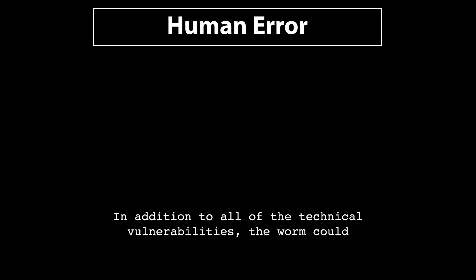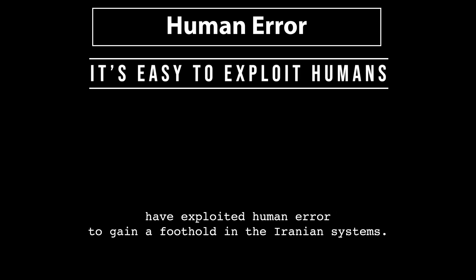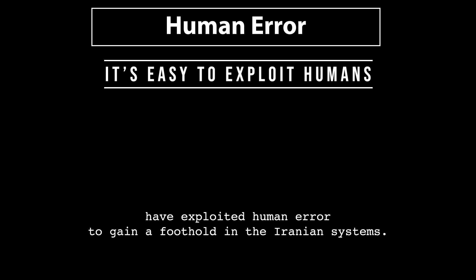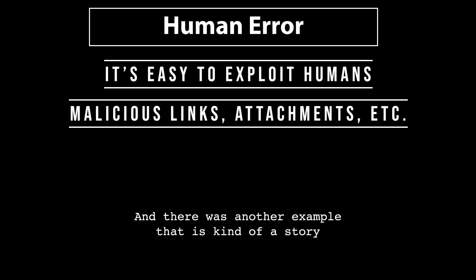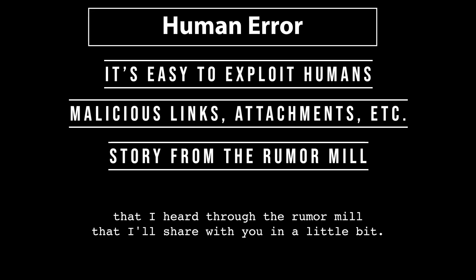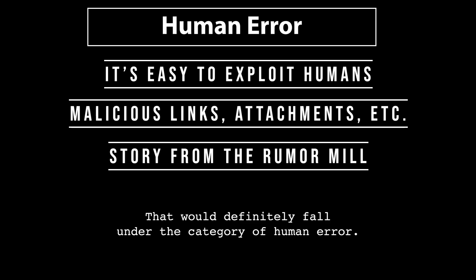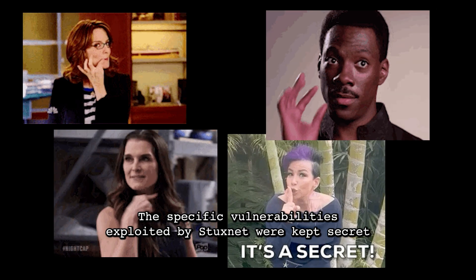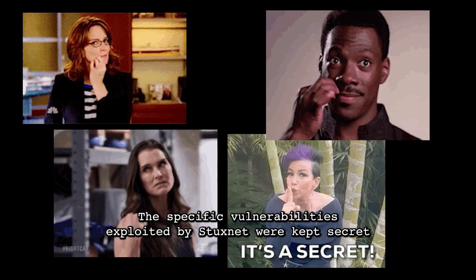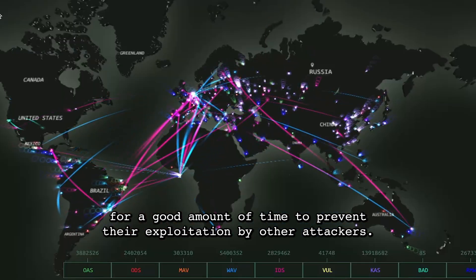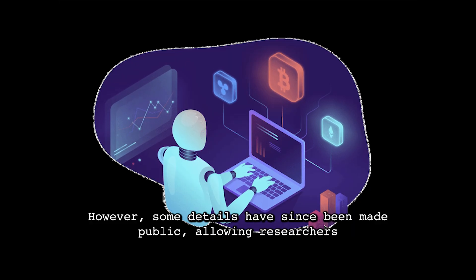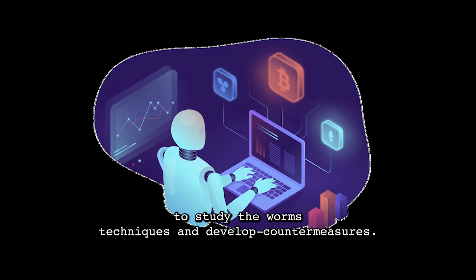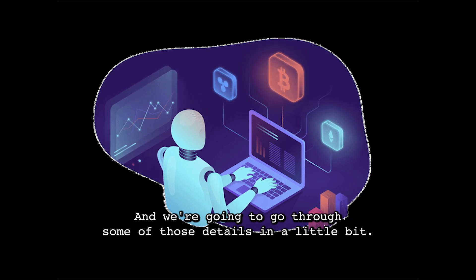And of course, human error. In addition to all of the technical vulnerabilities, the worm could have exploited human error to gain a foothold in Iranian systems — for example, employees clicking on malicious links or opening attachments from unknown sources. The specific vulnerabilities exploited by Stuxnet were kept secret for a significant amount of time to prevent exploitation by other attackers. However, some details have since been made public, allowing researchers to study the worm's techniques and develop countermeasures.